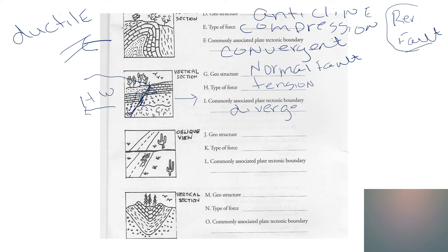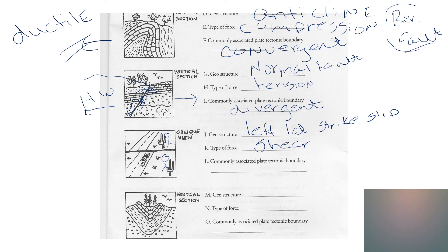Our view is totally different here — this is a bird's-eye view, what we'd get flying in a plane. That is going to be a strike-slip fault of what kind? Put yourself over here — the other side has moved to your left. Put yourself over here — the other side has also moved to the left. No matter what side you're on, the other side moved to the left, so that is a left-lateral strike-slip fault. The force is shear and the commonly associated plate boundary is transform.